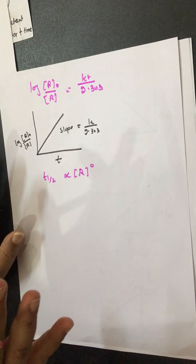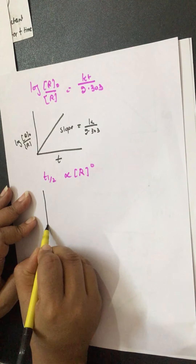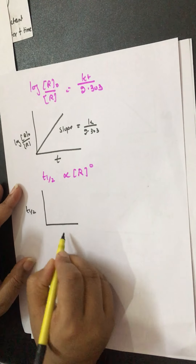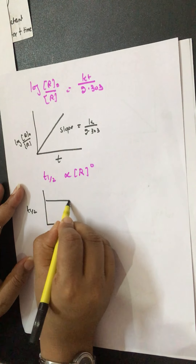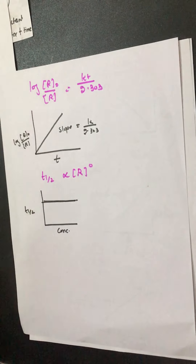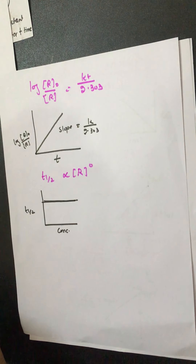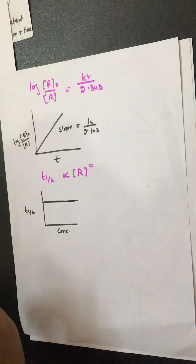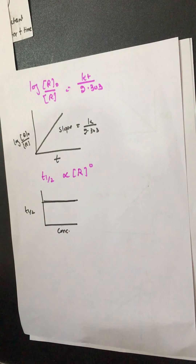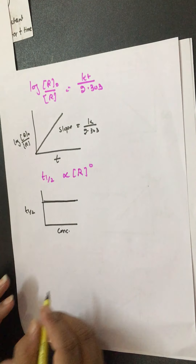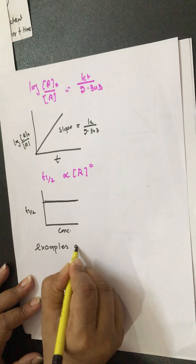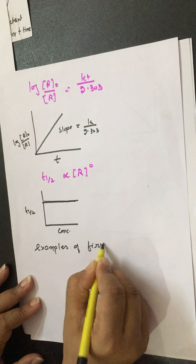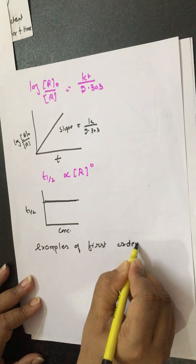For the graph of T½ vs. initial concentration of reactant: since T½ equals 0.693/k for first order reactions, T½ is independent of the initial concentration of reactant. Therefore, a graph of T½ vs. concentration gives a horizontal straight line — it doesn't depend on initial concentration.